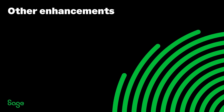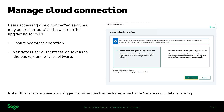Whilst waiting for any further questions, we'll just briefly talk about other enhancements. When you upgrade, if you use connected services, there's a chance that you are going to see the Manage Cloud Connection wizard. The aim is to streamline the process of reconnecting your connected services, should you need to do so — for example, if you're using Remote Data Access or Bank Feeds.